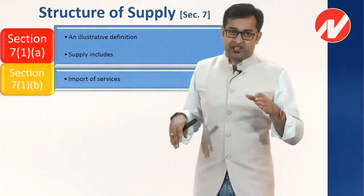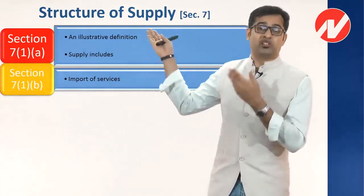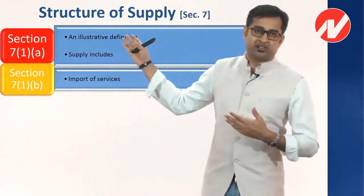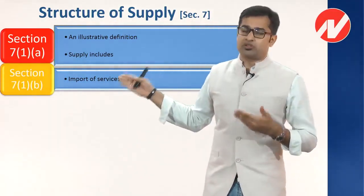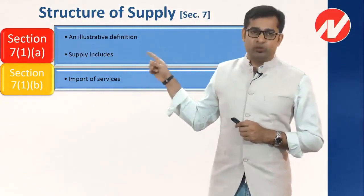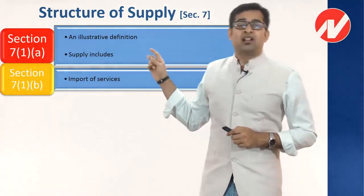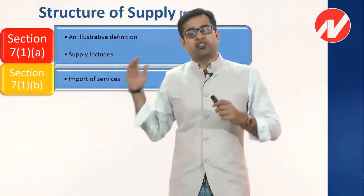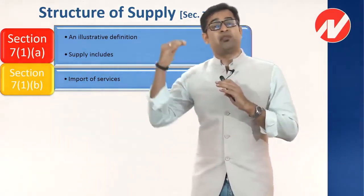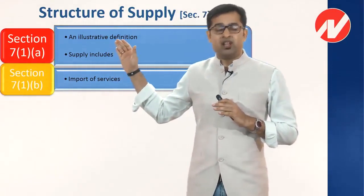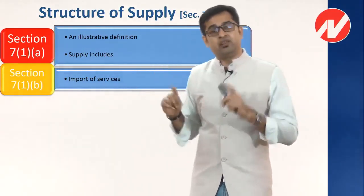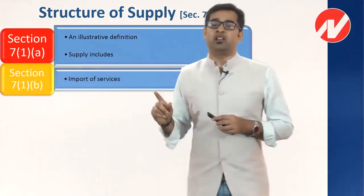So today, importation of services is liable for GST, and it has been separately defined — not covered under the original supply definition. Domestic transactions and service exports fall under Section 7(1)(a), while importation of services falls under Section 7(1)(b). When service is imported, Section 7(1)(b) becomes applicable. We will cover this in depth when we discuss the actual definition.